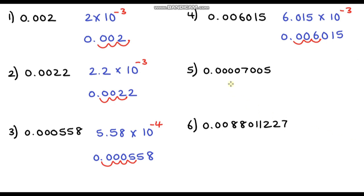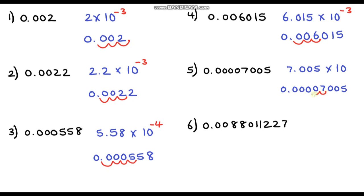Question five: our base number is going to be 7.005, multiplied by 10. The decimal point starts just after the seven and we're trying to get to this point over here — one, two, three, four, five places backwards — so the power is negative five.